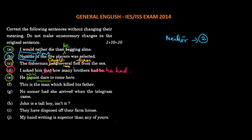Next, this is the man which killed his father. This is the man, which is associated with inanimate objects. Which goes with inanimate objects. And who or whom goes with people or animate objects, persons. This is the man who killed his father.